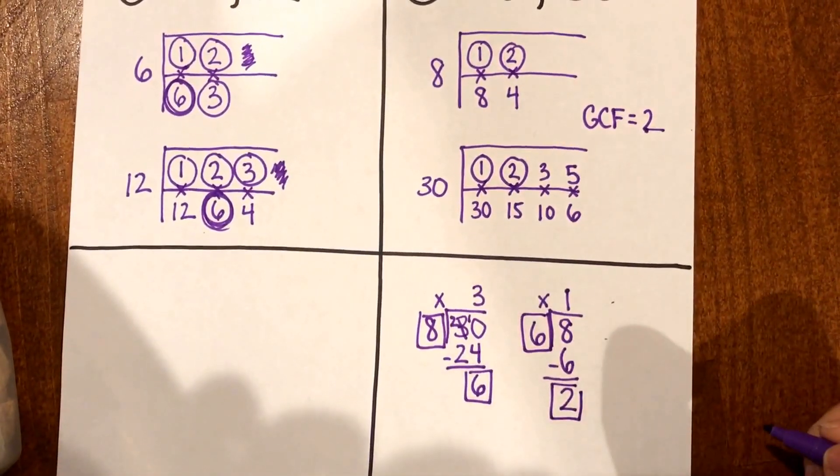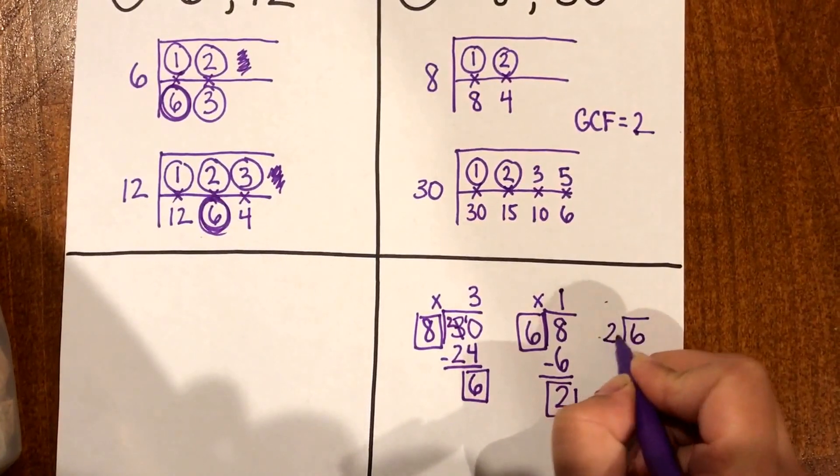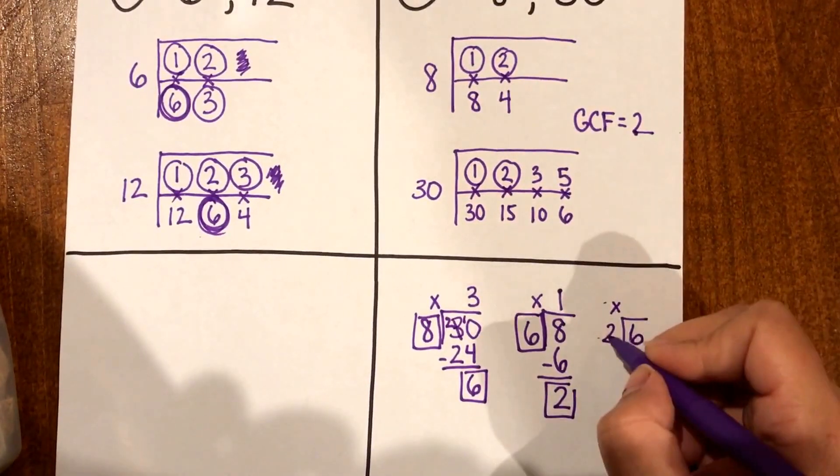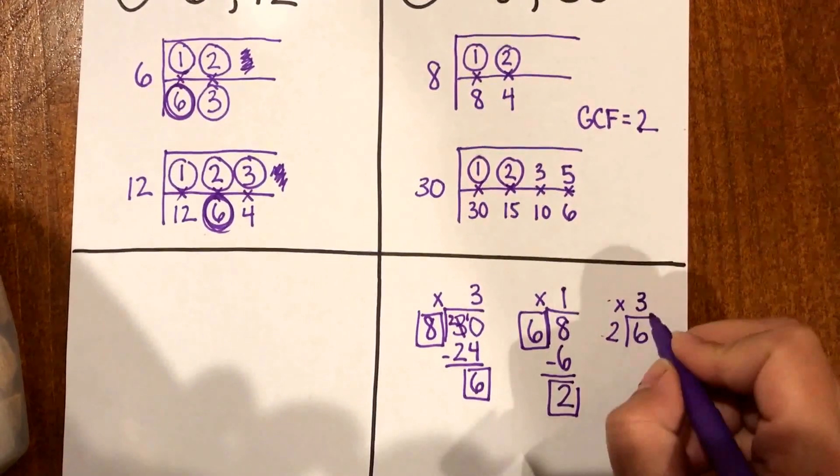And I still have a remainder so I need to use my division again of 6 and 2. Alright so I'm gonna do 6 divided by 2.